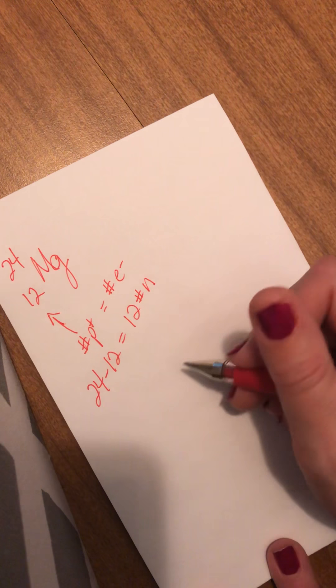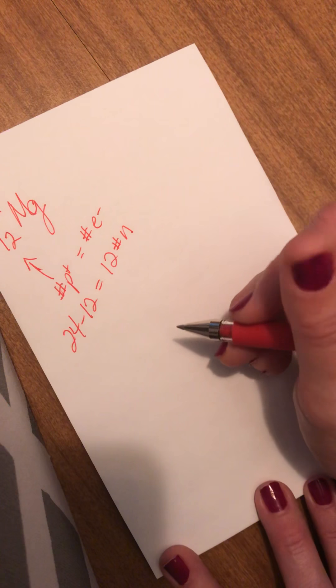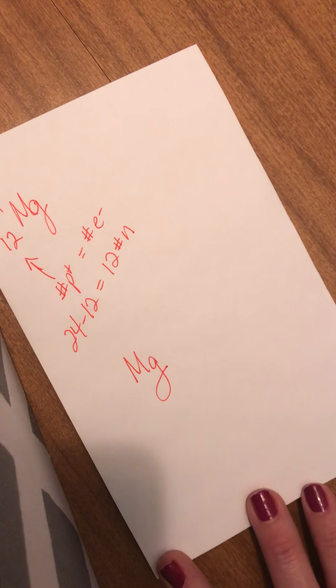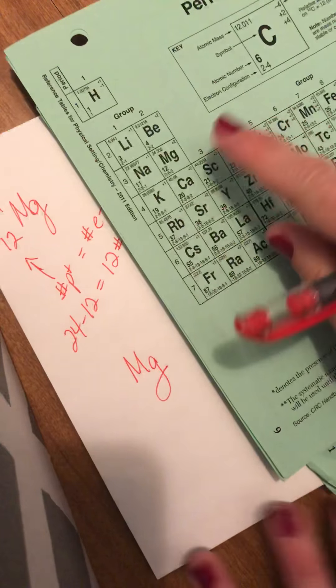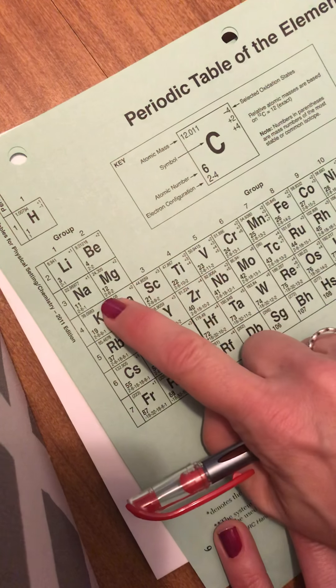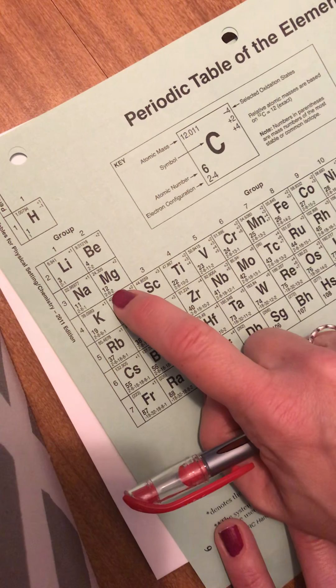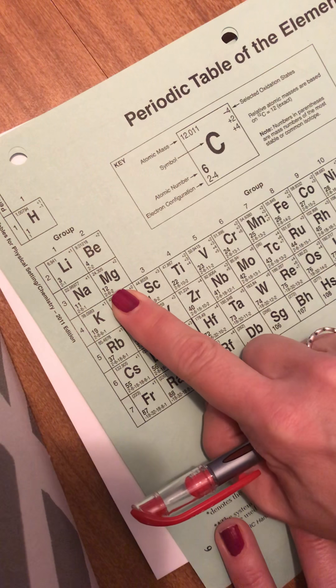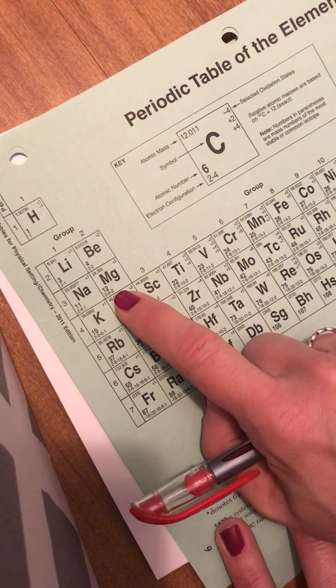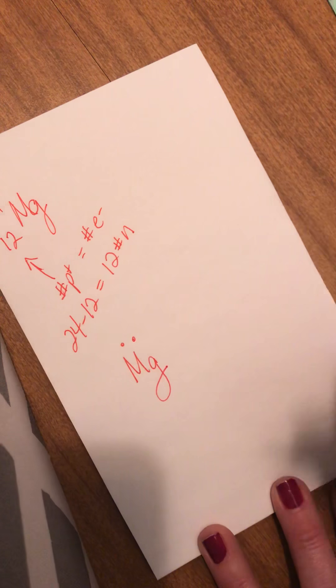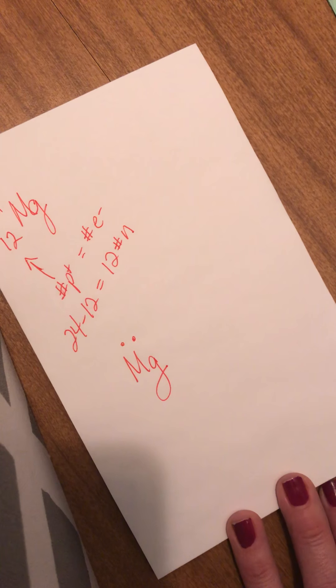When I want to do a Lewis dot diagram of magnesium, I take Mg, I look up its electron configuration. So here under Mg, it says 2-8-2, and what I care about are the valence electrons, the outermost shell of electrons. And that is 2, the last number. I put 2 dots, both right at the top of it, to show that it has 2 valence electrons.